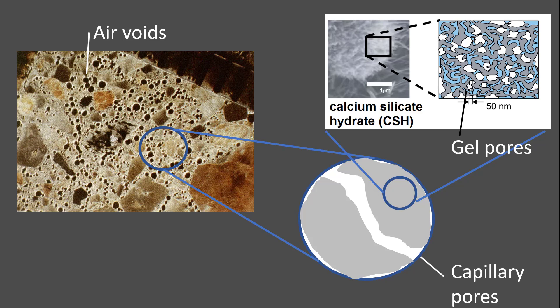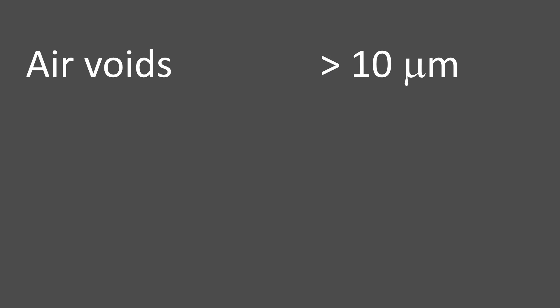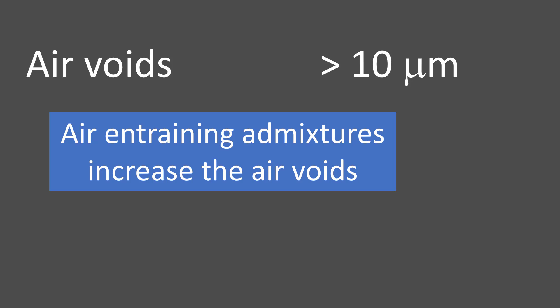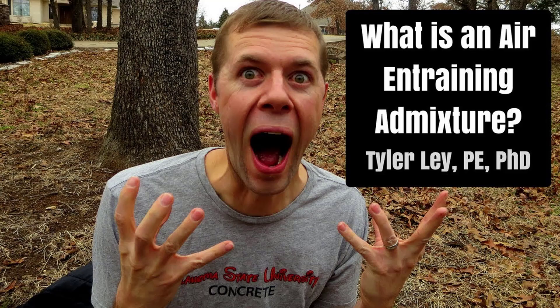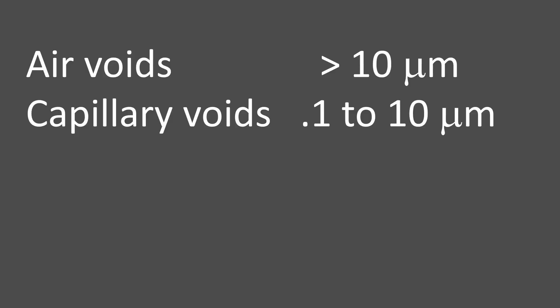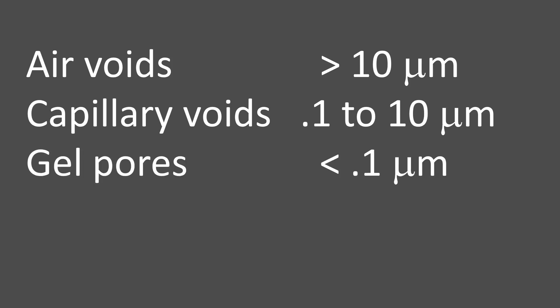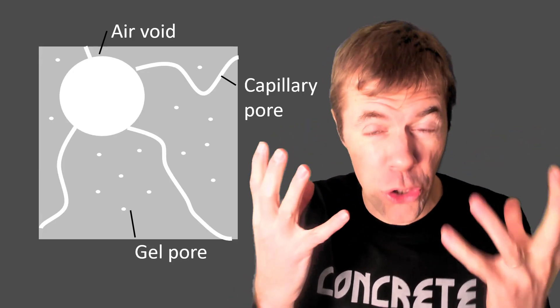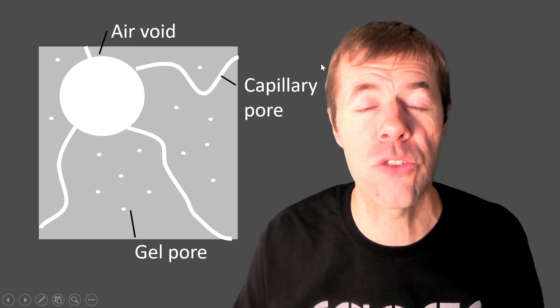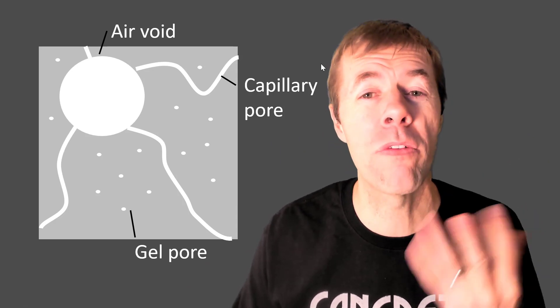What's the difference? It's all about their size and where they're located, but mainly about their size. Air voids are the big boys — greater than 10 microns in size. If you use an air-entraining admixture in your concrete while you're making it, you're going to make a larger number of these voids. The medium-sized voids are called capillary voids — between 0.1 and 10 microns. And the smallest of small are the gel pores, less than 0.1 microns. I'm going to draw a conceptual cartoon of what the innards of concrete look like as far as the pores go.